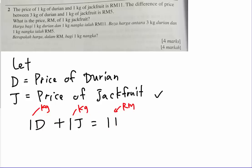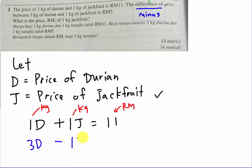Now I form the second equation. The question says the difference between 3 kg of durian and 1 kg of jackfruit is RM5. When I see the word 'difference,' the first thing that comes to mind is minus, because difference between A and B means A minus B or B minus A. So I write 3D minus 1J equals RM5.